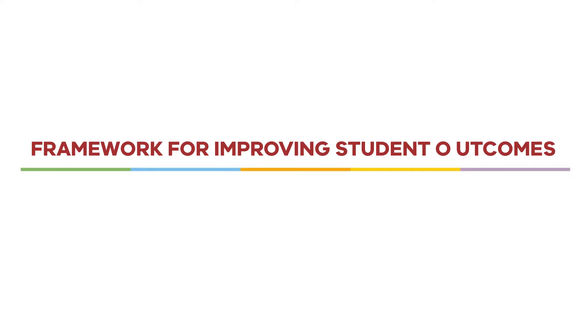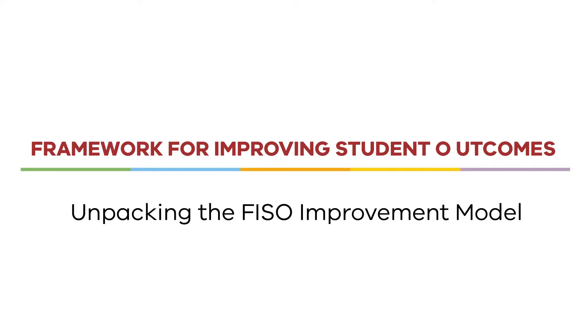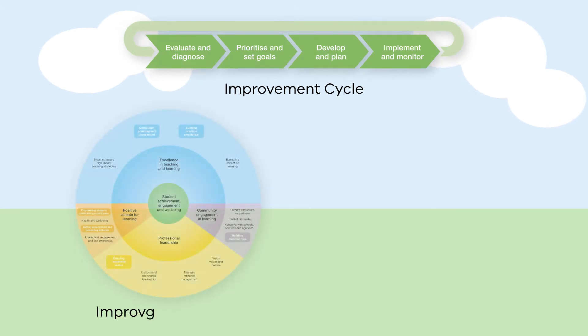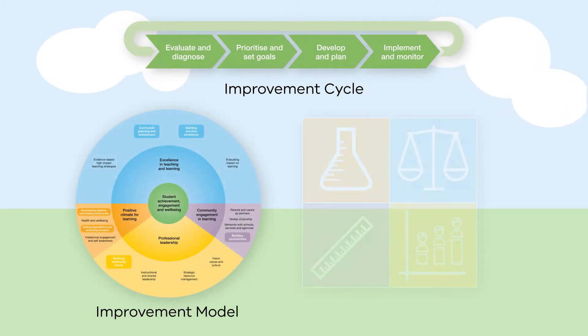The Framework for Improving Student Outcomes, FISO, is made up of an improvement cycle, improvement model, and improvement measures.